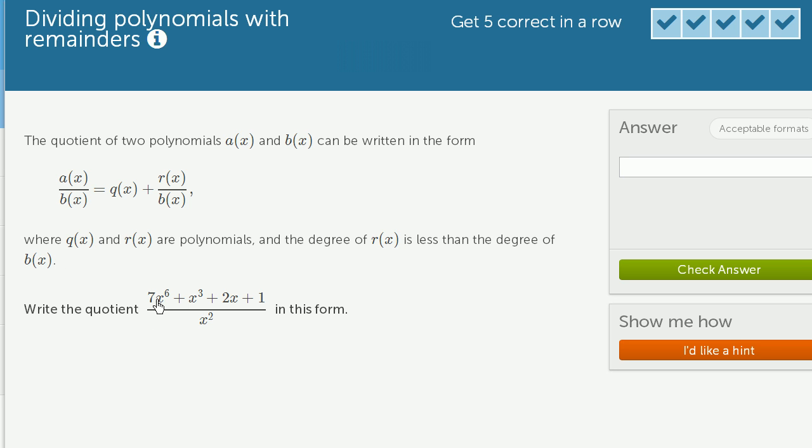Write the quotient 7x to the sixth plus x to the third plus 2x plus 1 over x squared in this form.